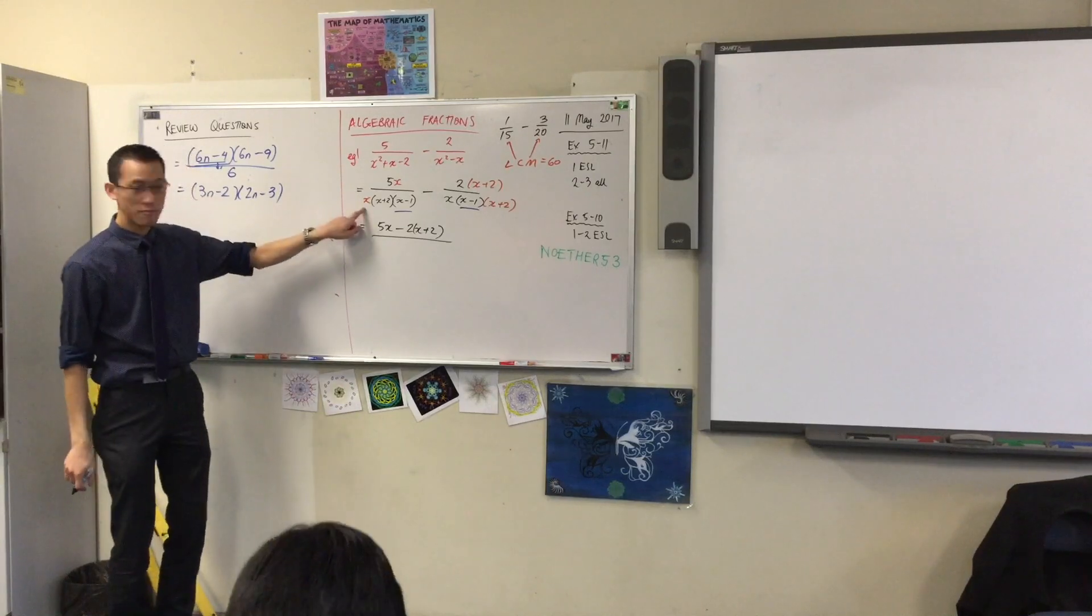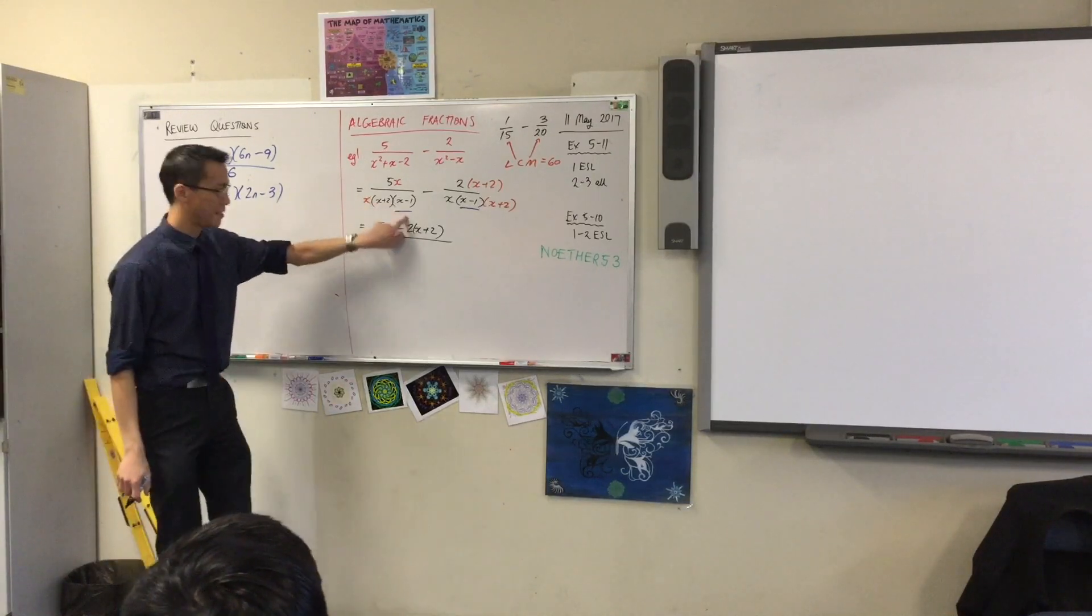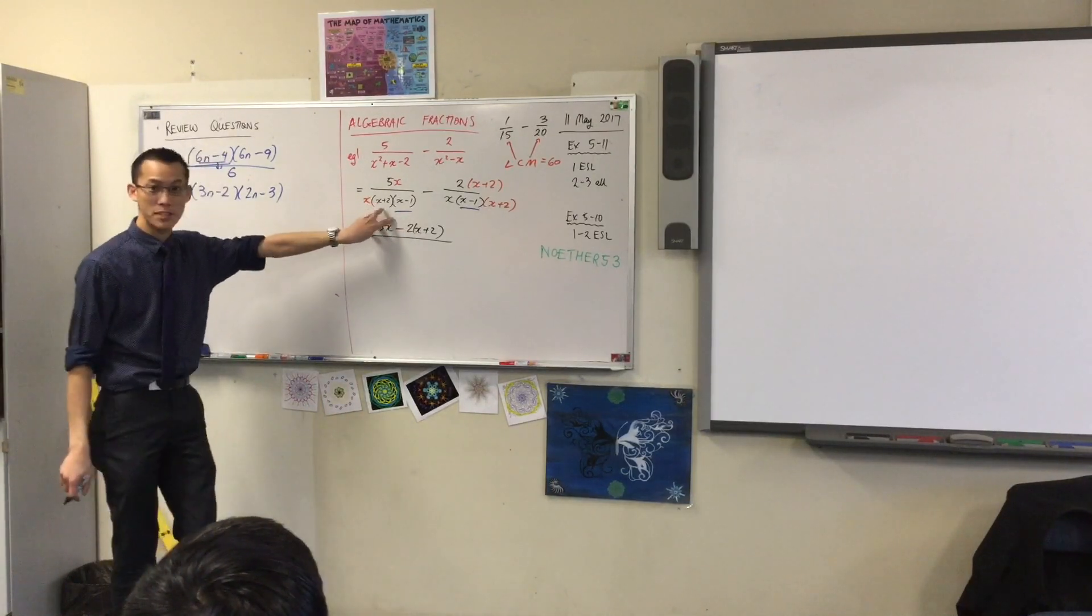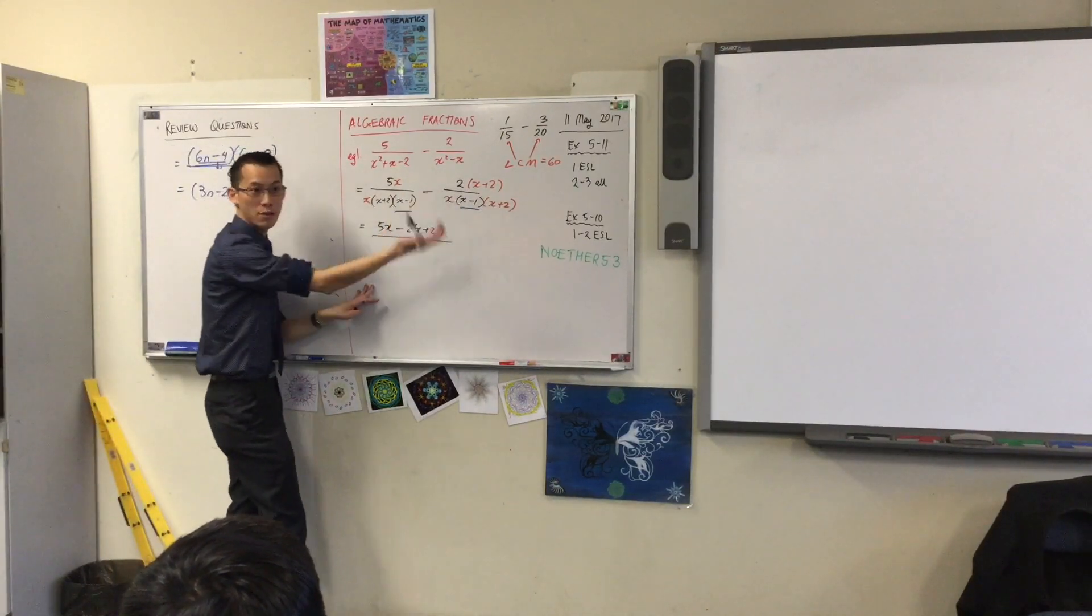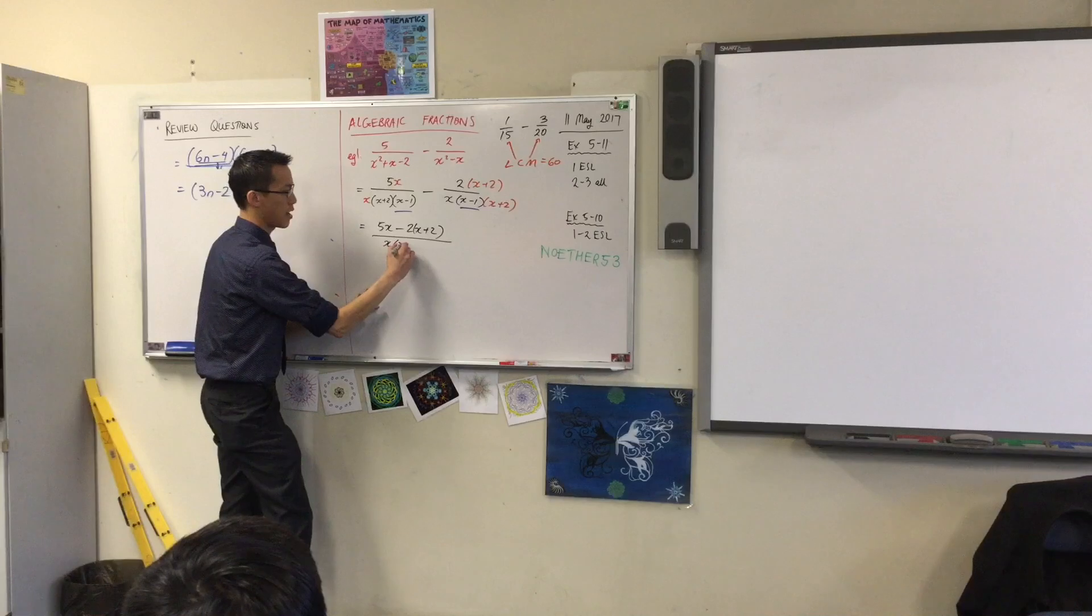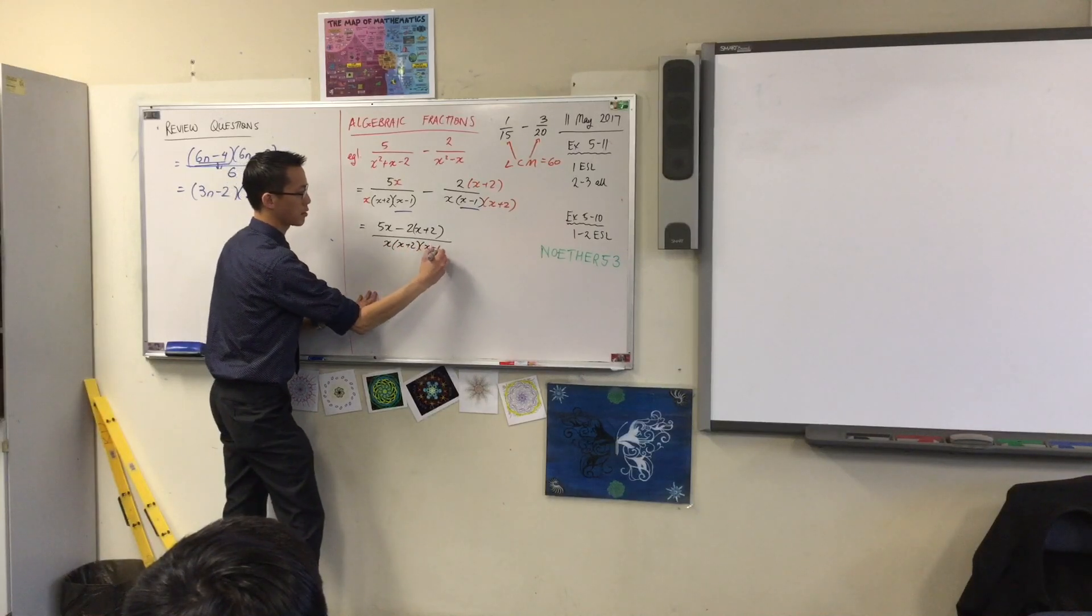X minus 1, X plus. That was the purpose of me putting extra things on here, right? To make this the common denominator in both cases. So, X, X plus 2, X minus 1.